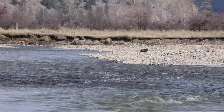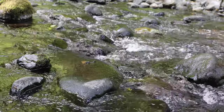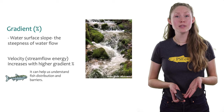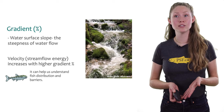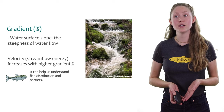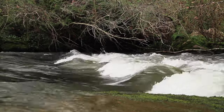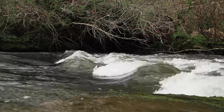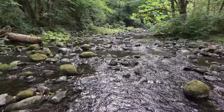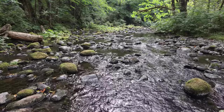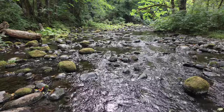Since rivers are just water moving down a slope, gradient is important to consider. Gradient is the steepness of a slope and usually describes the steepness as a percentage — the higher the percentage, the steeper the gradient of the river. Gradient is related to how fast the water flows downstream, and gravity is the force that pulls the water down the slope, just like how a ball would roll down a hill.